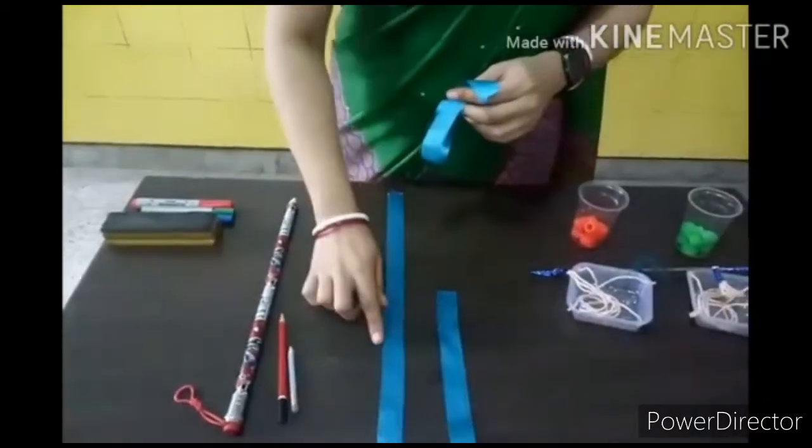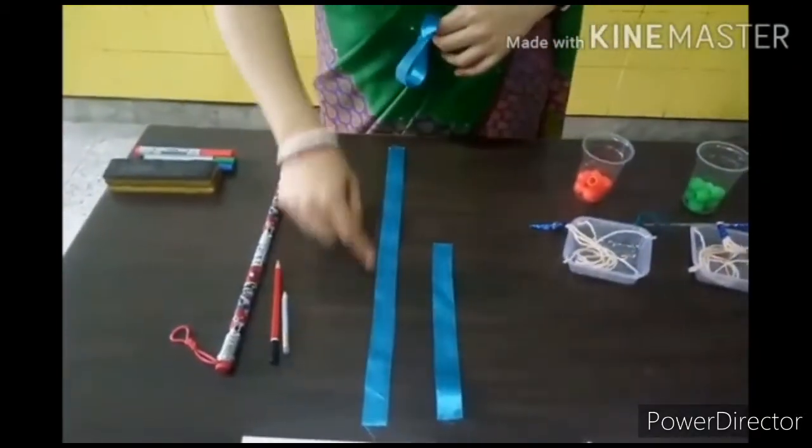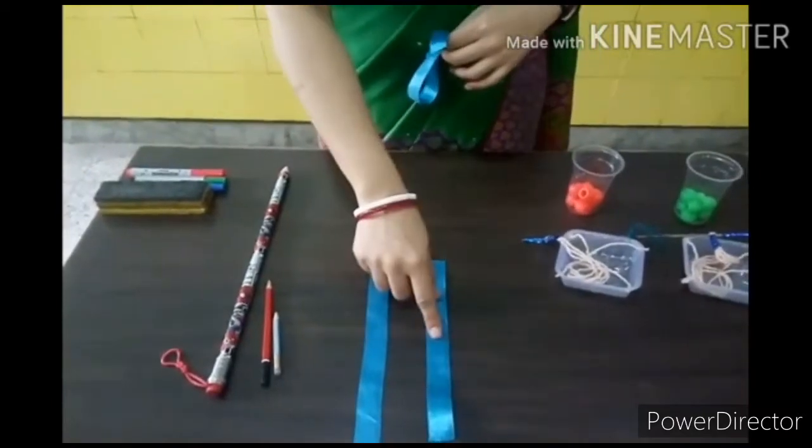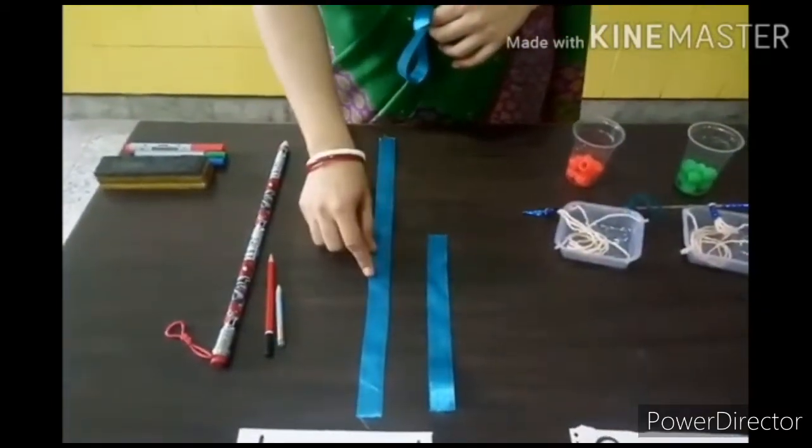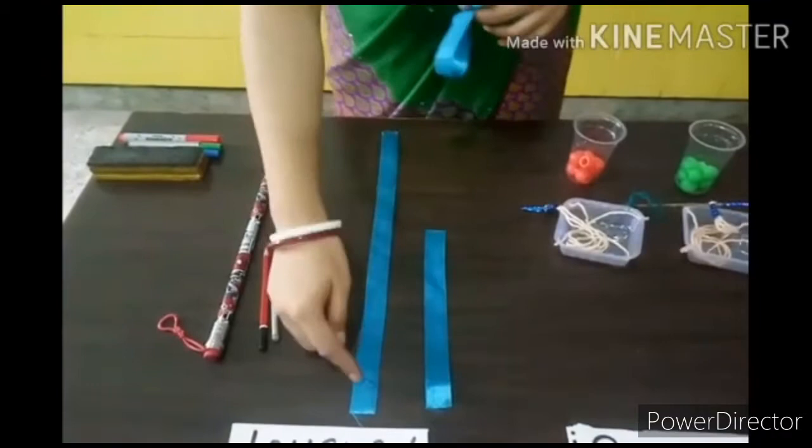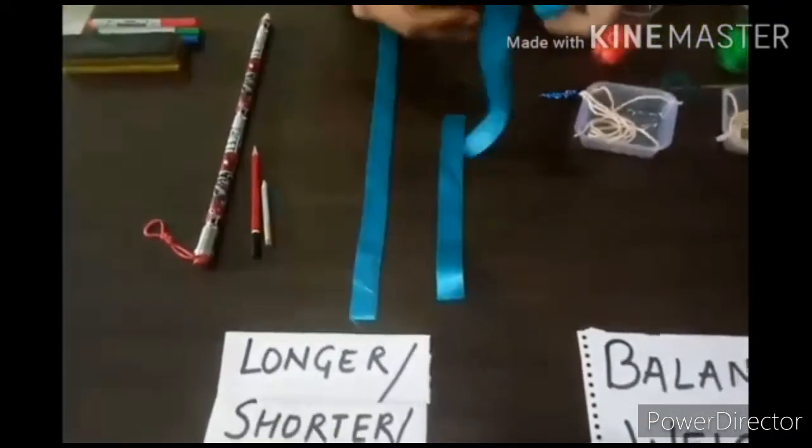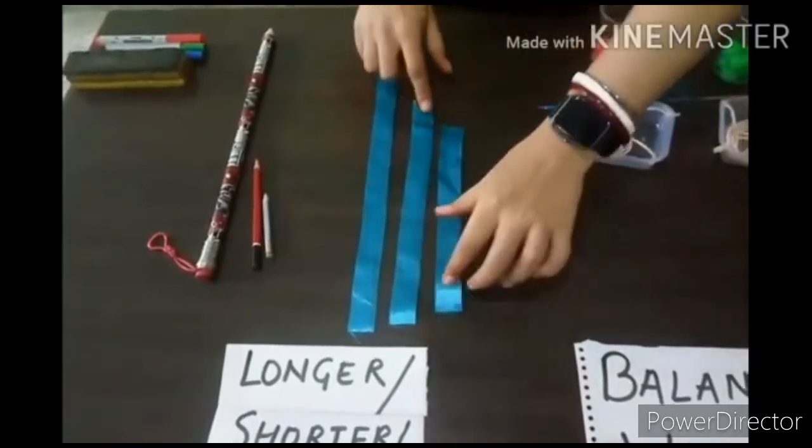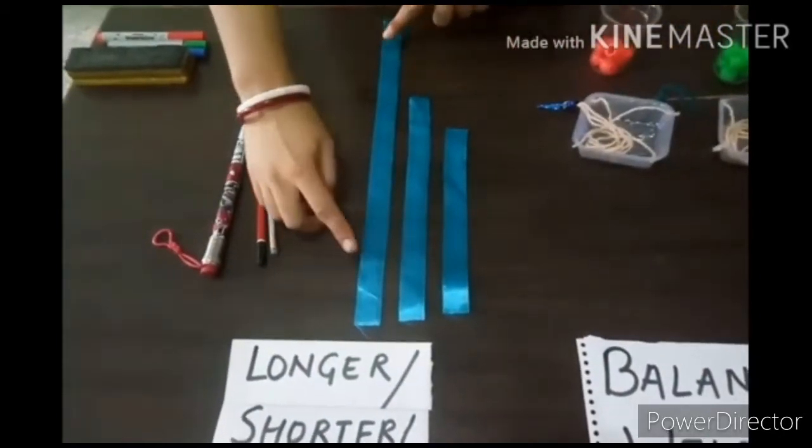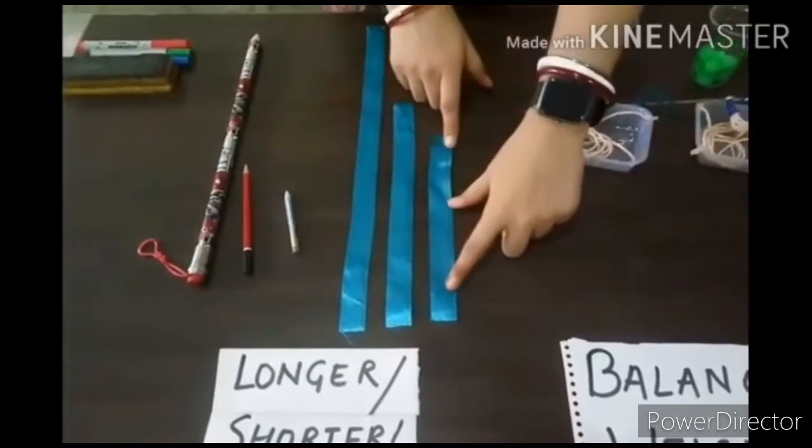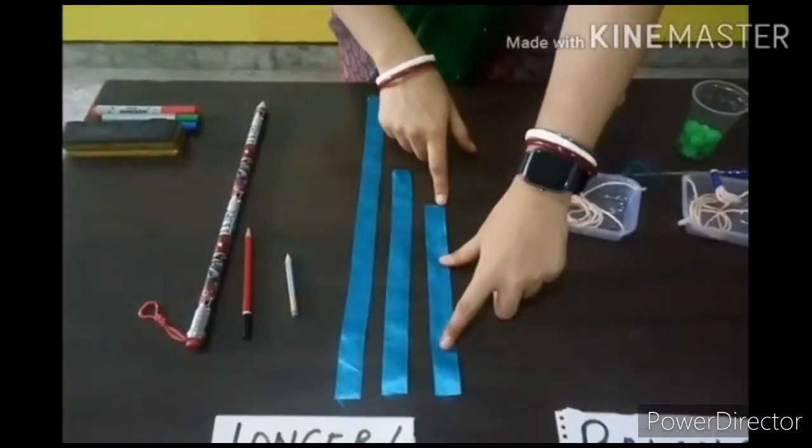Children, see, there are two ribbons kept here. This one is longer and this one is shorter. If two ribbons are kept here, we will say that this is the longer and this one is shorter. If a third ribbon will come, then we will say first ribbon is the longest and the third one is the shortest.